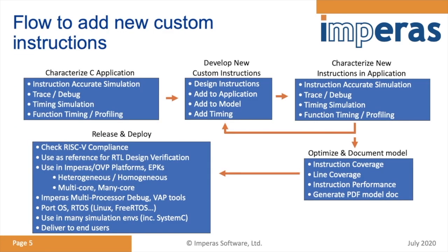The flow to add custom instructions really starts with analyzing the C code to look for hotspots. This allows you to simulate a design and look for key opportunities — parts of the algorithm that would benefit from a custom instruction. Through a process of developing a model, you can then tune and analyze further improvements and see the flexibility of how this would affect your whole design.